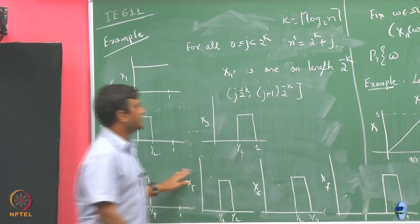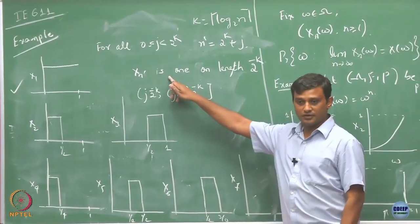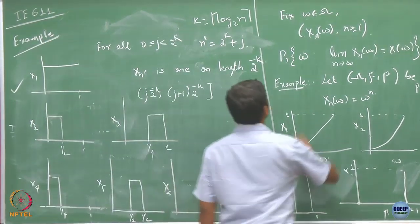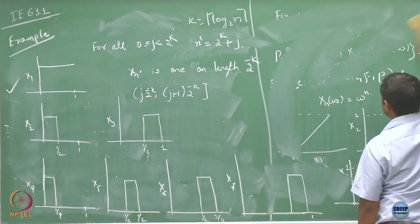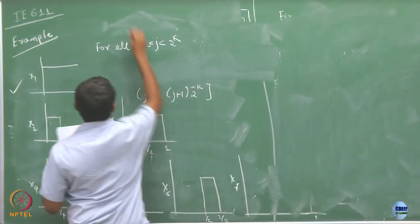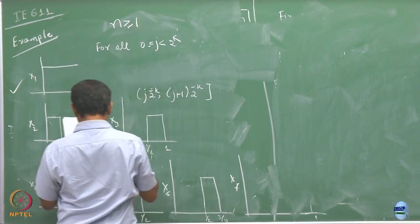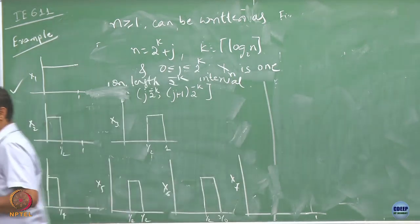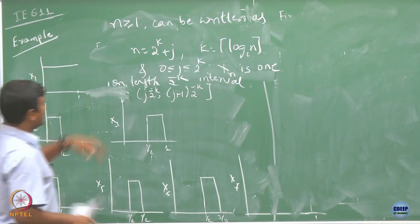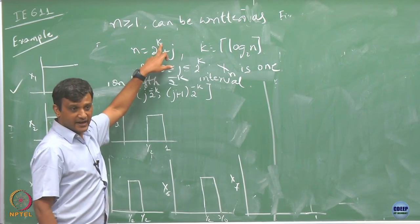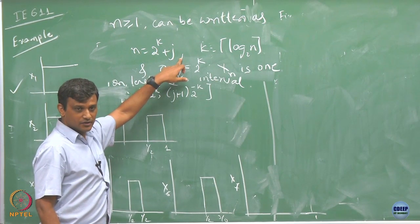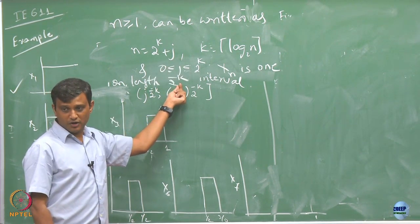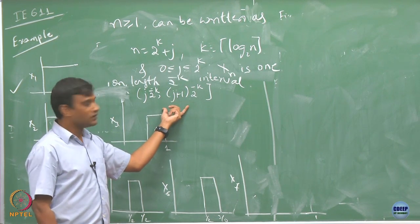You can generalize this description of your x_n's and then you have a sequence of x_n. Now let us try to understand where this sequence converges. Let us take any n that can be expressed in this form for some k and some j — and for that it is going to be of length 2^(−k) over this interval.